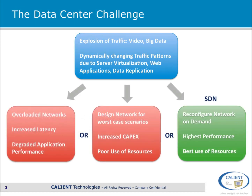The immediate result is an overloading of networks, which causes increased latency and ultimately leads to degraded application performance. An alternate solution is to design the network for worst case traffic; however, this leads to a significant increase in cost, and revenue from customers is stagnant, so it's really not sustainable. The solution that offers real value is to reconfigure the network on demand to put the capacity where it's needed most, resulting in a high-performance network that makes the best use of available resources.